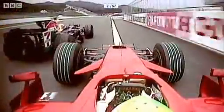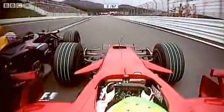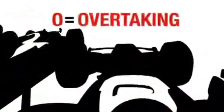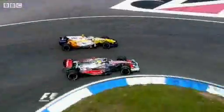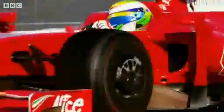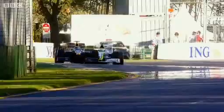Engineers from selected teams and the FIA formed the overtaking working group. After much wind tunnel research, they created a new design to increase overtaking opportunities. The bodywork has become much smoother with less aerodynamic add-ons, which reduces the turbulent air pouring from the back of the car. Lower and wider front wings are also less affected by the dirty air and help the drivers follow more closely.